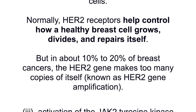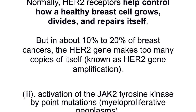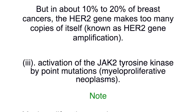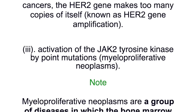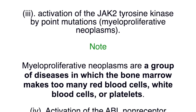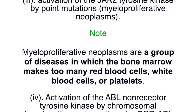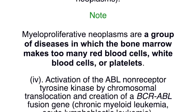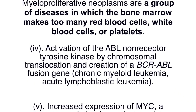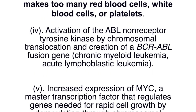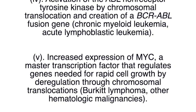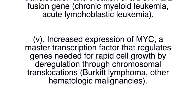Activation of the HER2 receptor tyrosine kinase by gene amplification occurs in breast cancer. HER2 proteins are receptors on breast cells that normally help control how a healthy breast cell grows, divides, and repairs itself. But in about 10–20% of breast cancers, the HER2 gene makes too many copies of itself — known as HER2 gene amplification. Activation of the JAK2 tyrosine kinase by point mutations occurs in myeloproliferative neoplasms, a group of diseases in which the bone marrow makes too many red blood cells, white blood cells, or platelets.